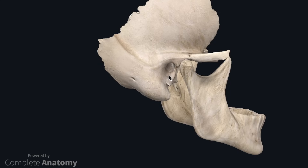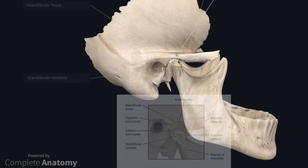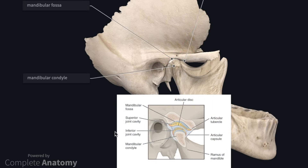Now with the mandible back in the model, we can talk about the temporomandibular joint. The TMJ is a synovial joint at the articulation between the condyloid process of the mandible and the mandibular fossa of the temporal bone, in a region known as the infratemporal fossa. The joint includes an articular disc that splits the TMJ into an upper compartment and a lower compartment. Gliding movements are permitted in the upper compartment, such as protrusion, retraction, and side-to-side movements. In the lower compartment, rotational movements occur, such as elevation and depression. Depression of the jaw will only occur once the condyloid process has moved anteriorly within the upper compartment. The movement is limited anteriorly by the articular tubercle.